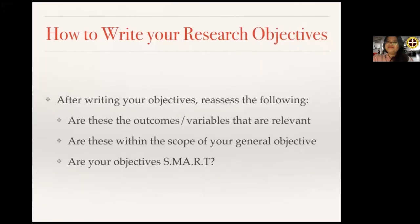After writing your objectives and listing them down, you reassess the following. First and foremost, are these the outcomes or variables that are relevant? You look at your own practice, your own surroundings — are these relevant to us, to my society, to my institution? You also ask other people, do you think these are the important variables that I have to measure? The next thing is to determine whether these objectives are within the scope of your general objective.